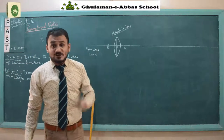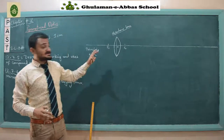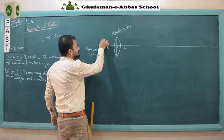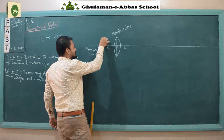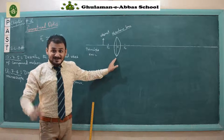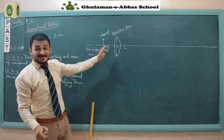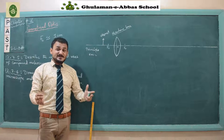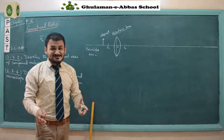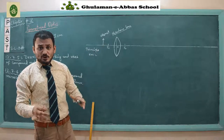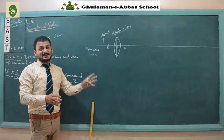Now we will place the object for this compound microscope. We have placed our object — this is our object. Now we apply the same rules for image formation by convex lens that we have learned before, which we studied in previous classes.